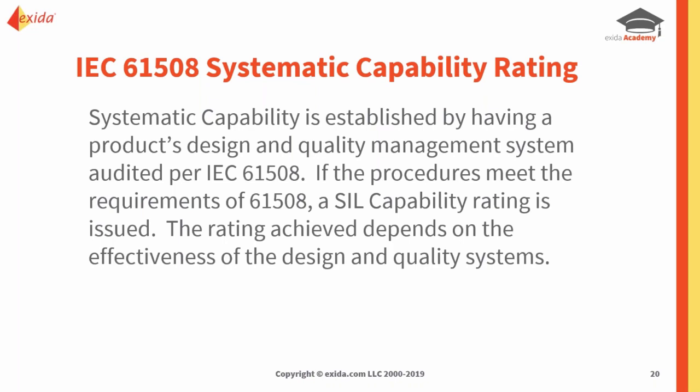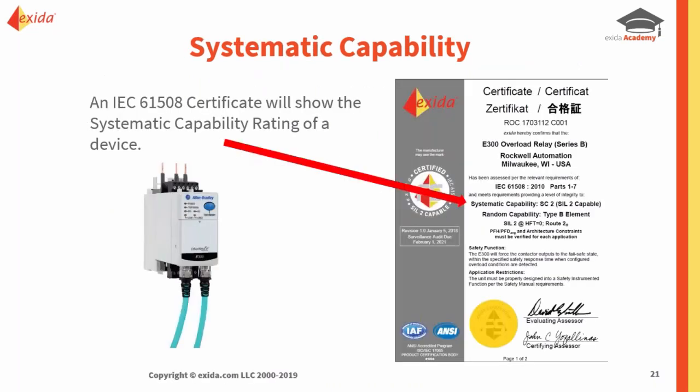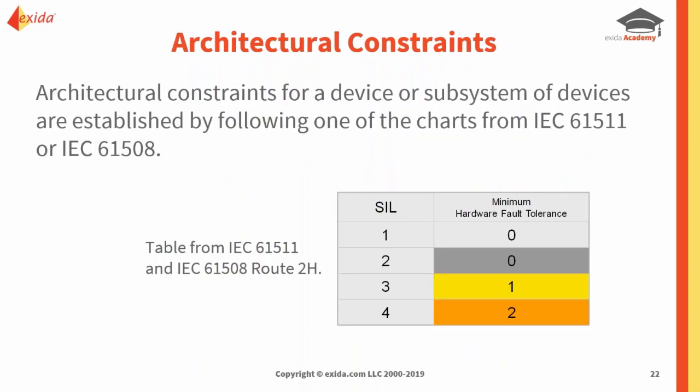The other way is the IEC 61508 systematic capability rating, which is established by having a quality management system audited per IEC 61508. If the QMS meets the requirements of the standard, a SIL rating is issued. The SIL rating achieved depends on the effectiveness of your quality management system — the more robust, the higher SIL rating you can achieve. Considerations include how you source part suppliers, how you make modifications, and how returns and recalls are handled. When a motor controller becomes certified, the systematic capability is shown on the product certificate. Without this certification, this barrier becomes very hard — the end user must go through prior use justification, which is a great deal of time and essentially money lost. It's a huge selling point for manufacturers if they can provide a certificate.